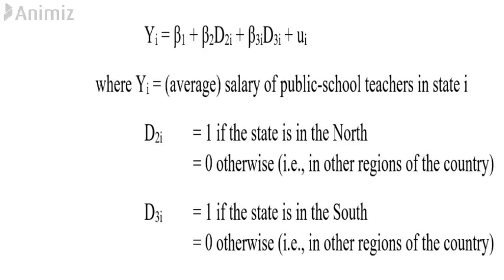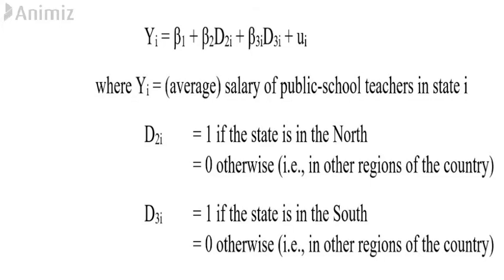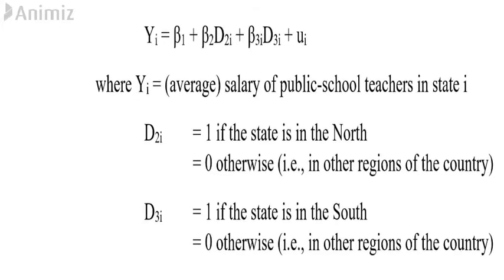Yi is equal to β1 plus β2 D2i plus β3 D3i plus ui. Yi represents the average salary of public school teachers and the i represents each state. D2i is 1 if the state is in the North and 0 otherwise. D3i is 1 if the state is in the South and 0 otherwise.